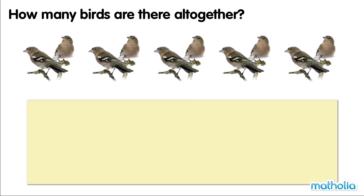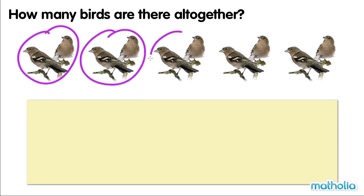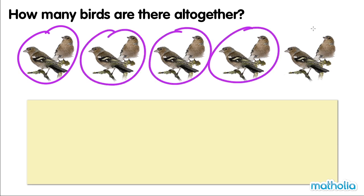How many birds are there all together? There are one, two, three, four, five groups of birds. In each group, there are two birds.